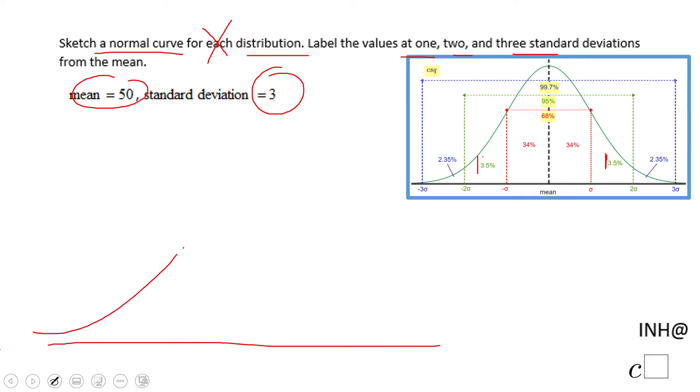start over the curve. Right in the middle you're going to put 50 - you're going to put the mean. Right, and then you add